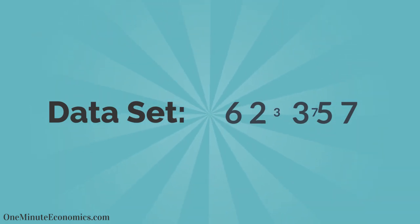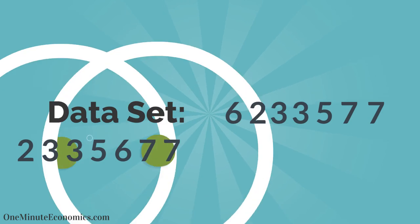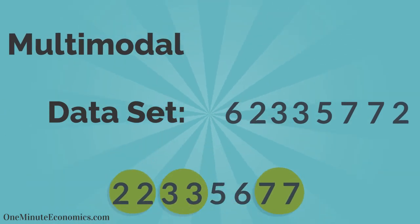What if instead of eliminating one of the 3s, we add a 7 to the original string, which becomes 2, 3, 3, 5, 6, 7, 7. In this case, there are two modes, 3 and 7, so we call this dataset bimodal, and if there are more than two, the dataset is called multimodal.